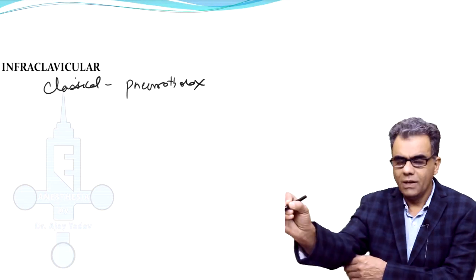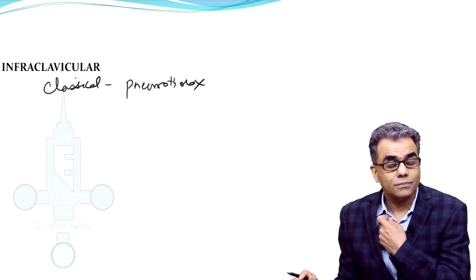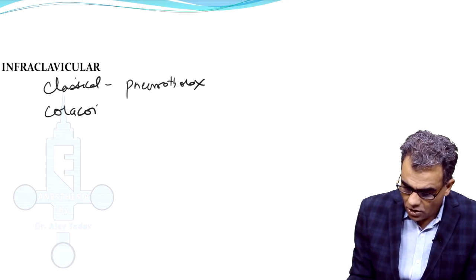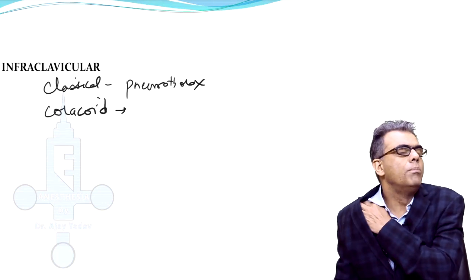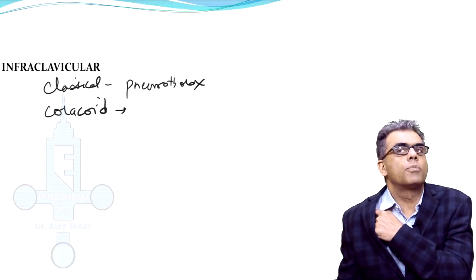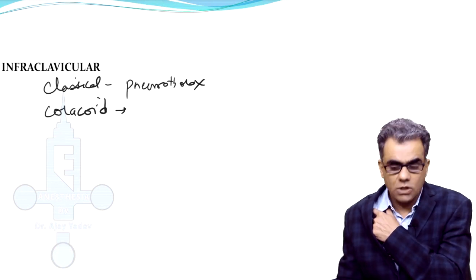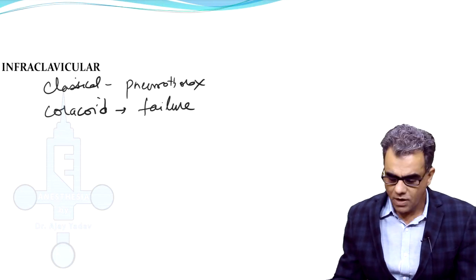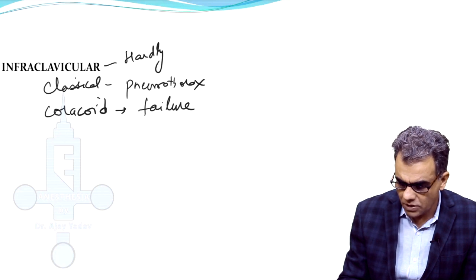People stopped using this infraclavicular approach. Then they devised a modified approach, the coracoid approach, blocking brachial plexus below the tip of coracoid process at the shoulder level. But with this approach the block failure rate became too high. Infraclavicular approach is hardly used, nobody is using it.